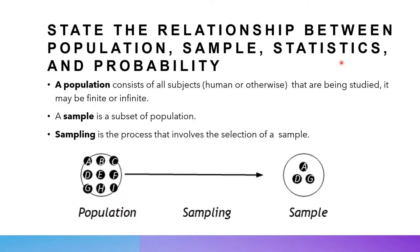Before we can look at the relationship between a population, sample, statistics and probability, we have to know what these terms mean. A population is basically anything that we want to study. The problem is we cannot really study a population because it could be infinite. For example, if you want to study the nutritional content of McDonald's fillet fish or cheeseburger, there is no time limit — you are studying current products, those already sold and eaten, and those yet to be produced. So we can't actually do that if the time is infinite.